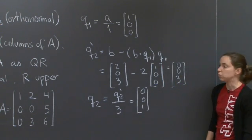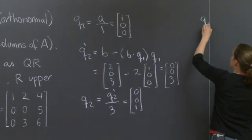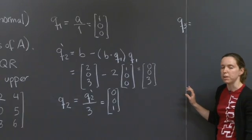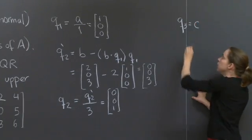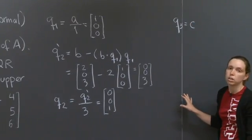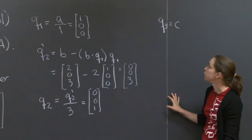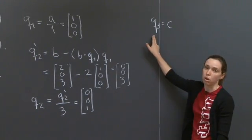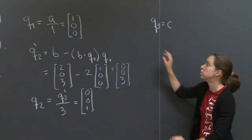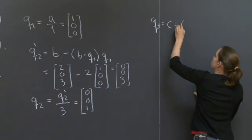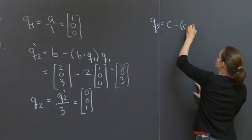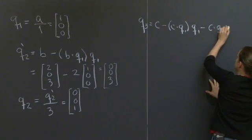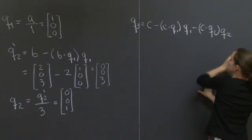Let's go on to the third one, Q3. Well, again, I start with my third vector c, and then I want to subtract the projection of c onto Q1 and onto Q2. And that will give me a Q3 that is orthogonal to both Q1 and Q2. c minus c dot Q1 times Q1 minus c dot Q2 times Q2.